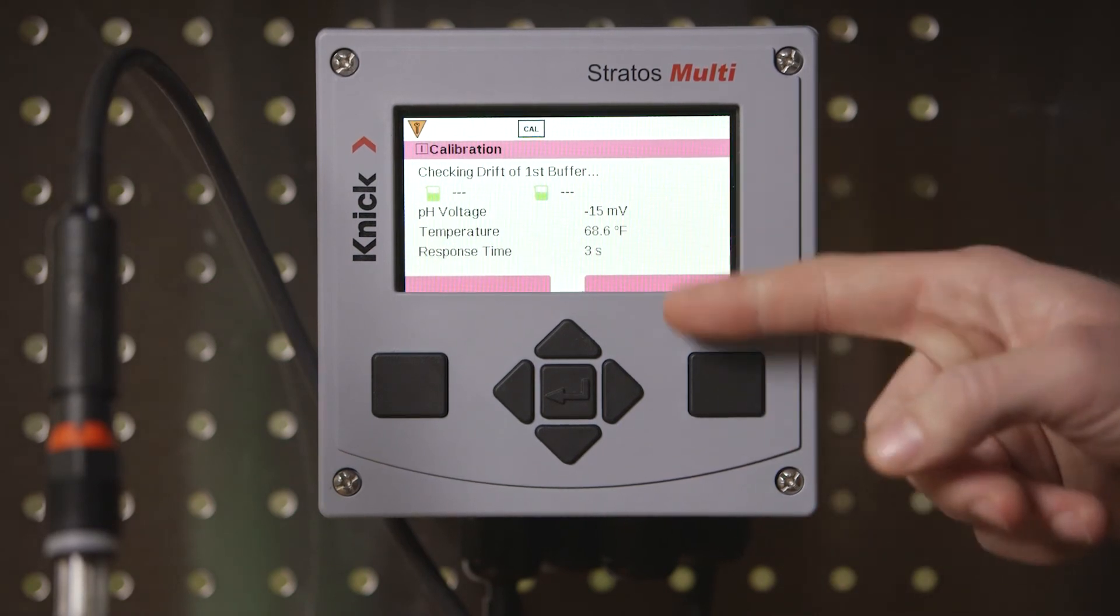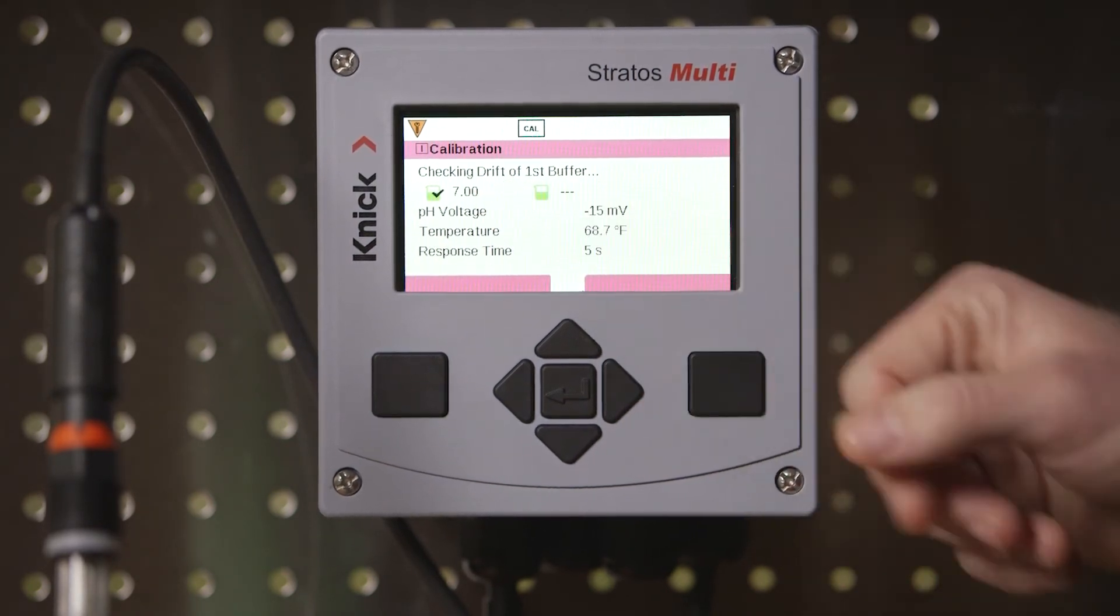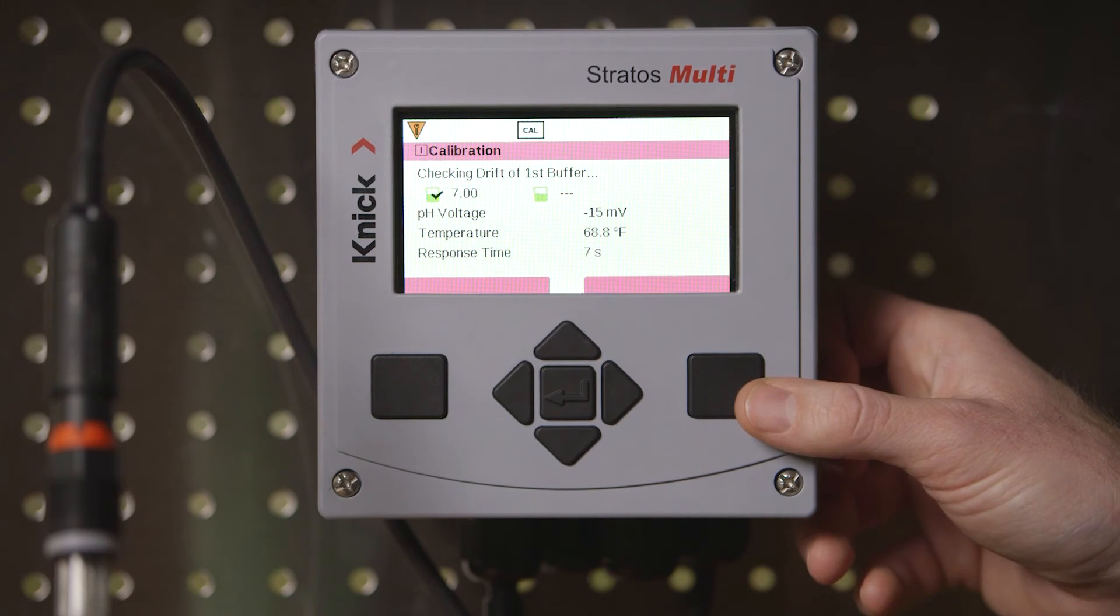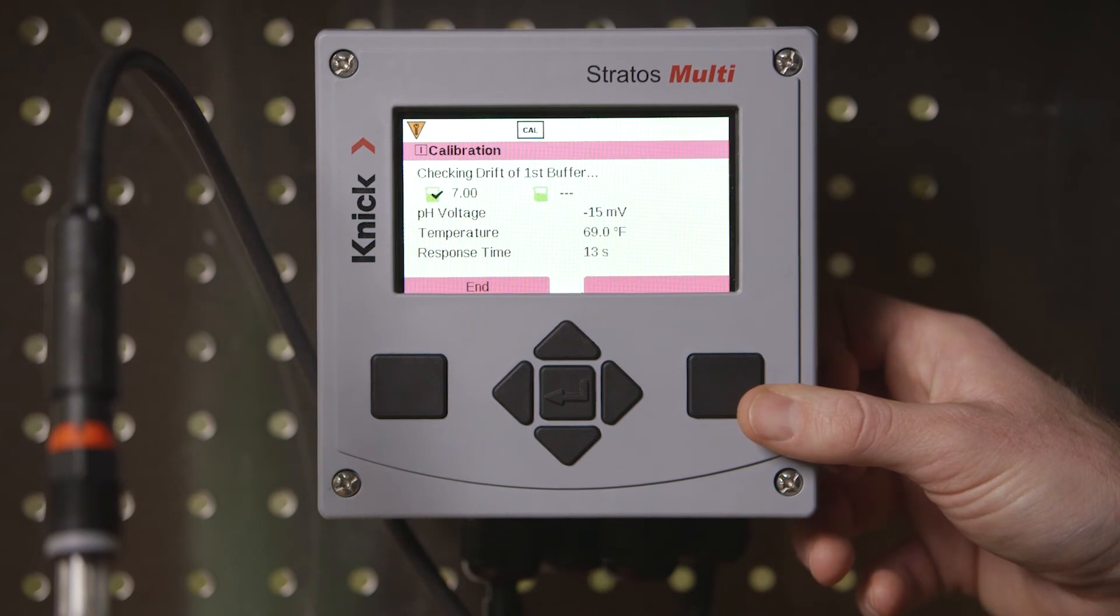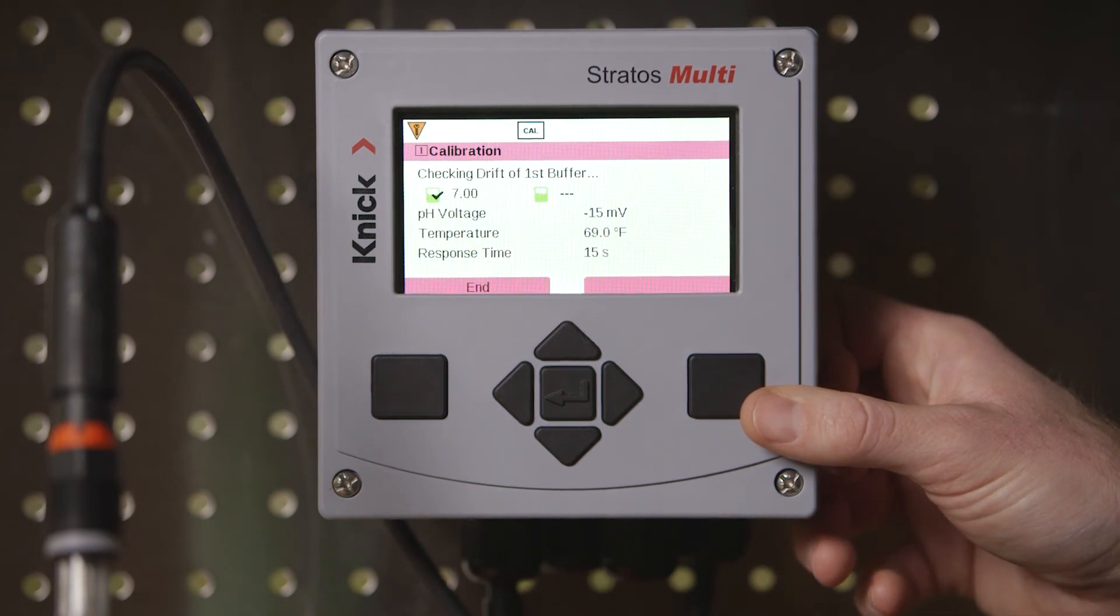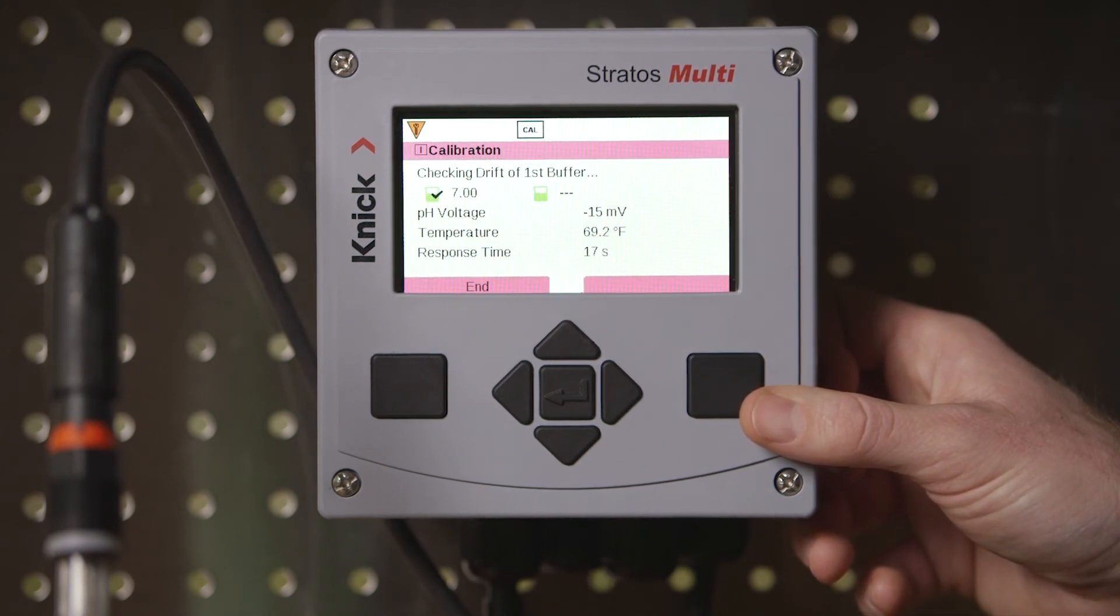After pressing next the transmitter will begin to check the drift in the first buffer solution. You can see that the buffer value is automatically recognized. The raw pH voltage value is displayed along with the measured temperature and response time of the electrode in the buffer.